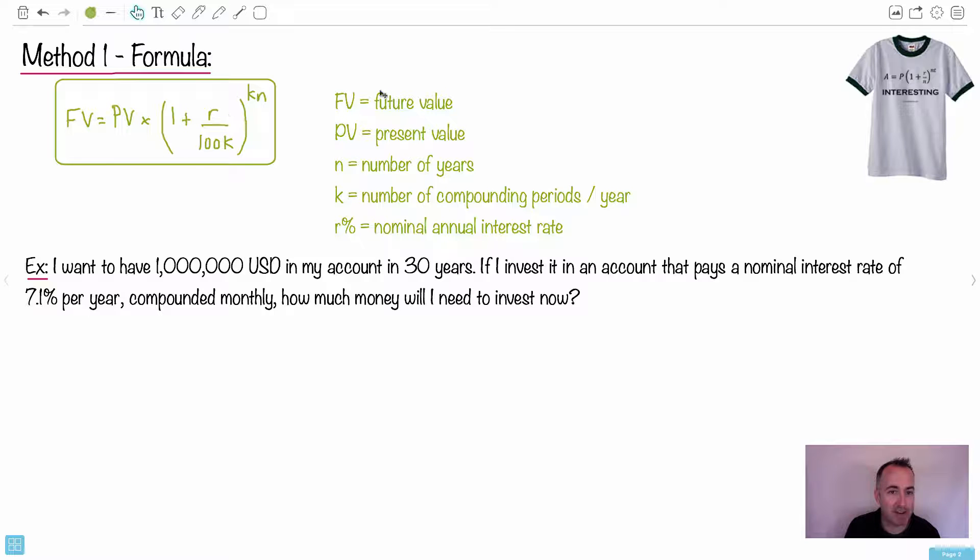So here FV is the future value. PV is present value. R is the nominal annual interest rate. It's what I just talked about. That interest rate is a percent. Now the other weird thing that we have, K. K is the number of compounding periods per year, and N is the number of years. And you even get this information here. This is also given on your data booklet, so you don't have to, or your formula booklet. You don't have to memorize that either. That's the good news.